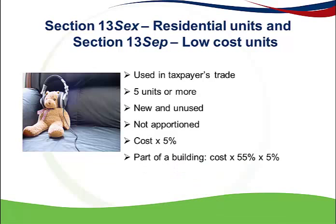Again, if only part of a building is purchased, then the cost price of that part must be multiplied by 55% first before the 5% allowance is applied. However, if the residential units qualify as low-cost units, then the section 13 SEP allowance applies, which permits an allowance of 10% of the cost price per year for 10 years.